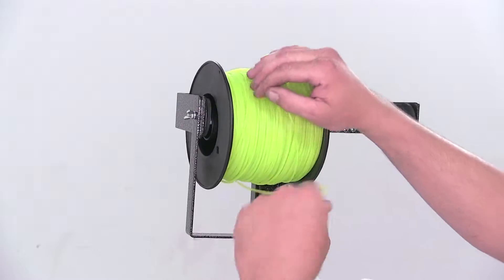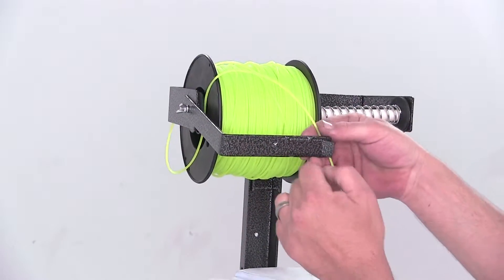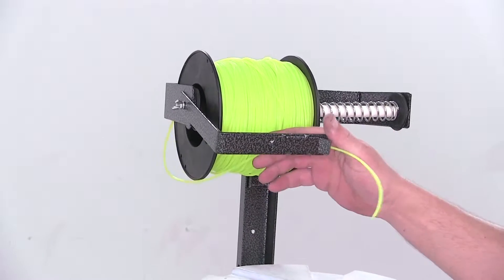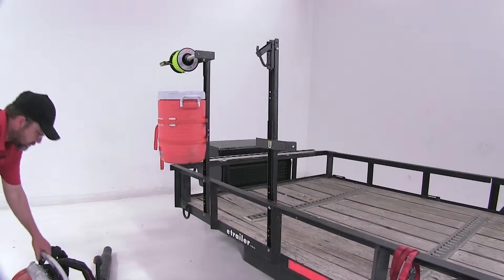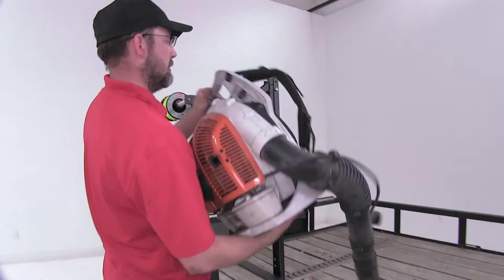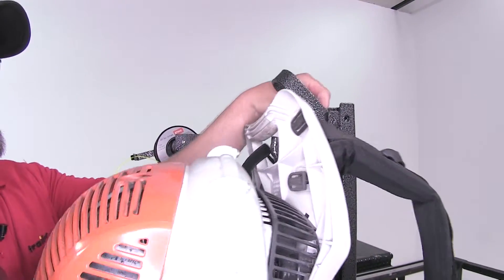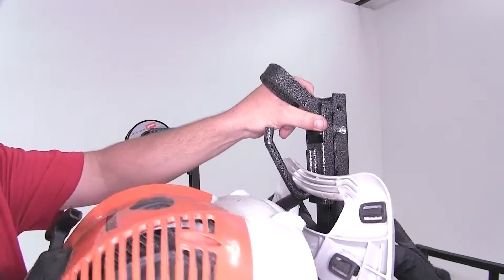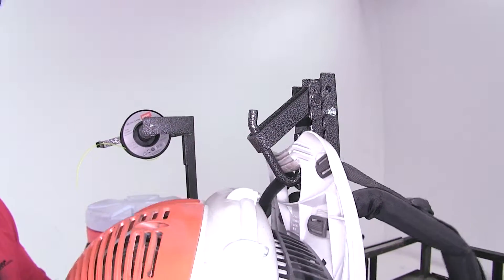Now, our string can go through the bracket where it will help hold it in place while we travel down the road. Now our backpack blower is another real simple install. We'll open up the top hook, hook it around the top handle, and let it set in place.